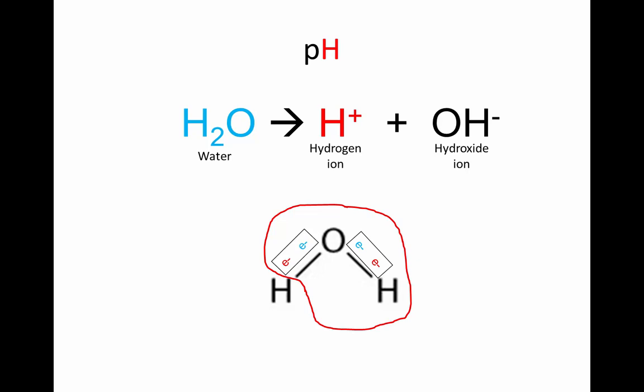Our last concept within the basic chemistry tutorial is pH. pH stands for potential hydrogen ions. pH is a measurement of the hydrogen ion concentration in a solution. Take a look at a water molecule, made up of two hydrogen atoms and one oxygen.